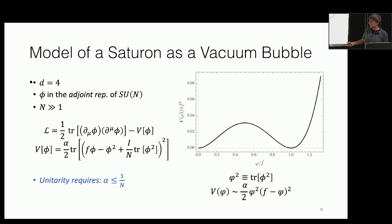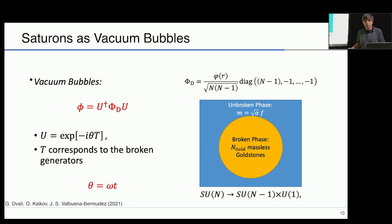Unitarity of the theory requires that alpha is at most 1 over N — that's the maximum. This translates as the bound on the information storage capacity of these objects.